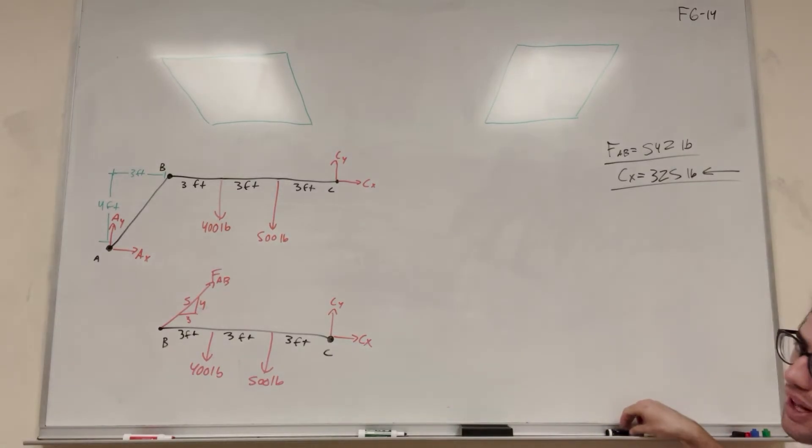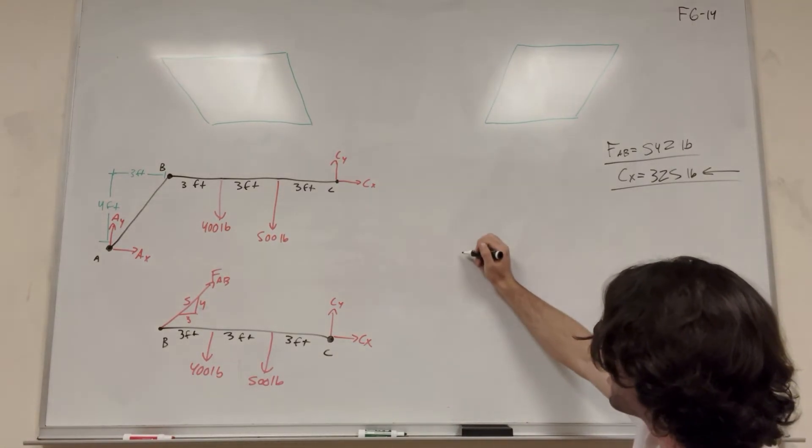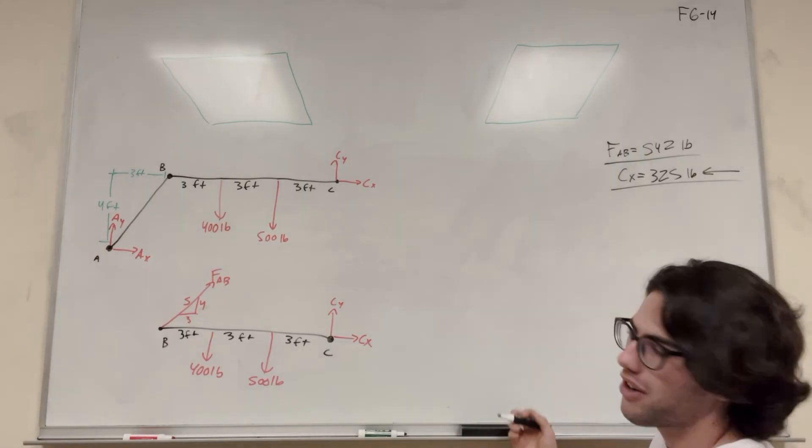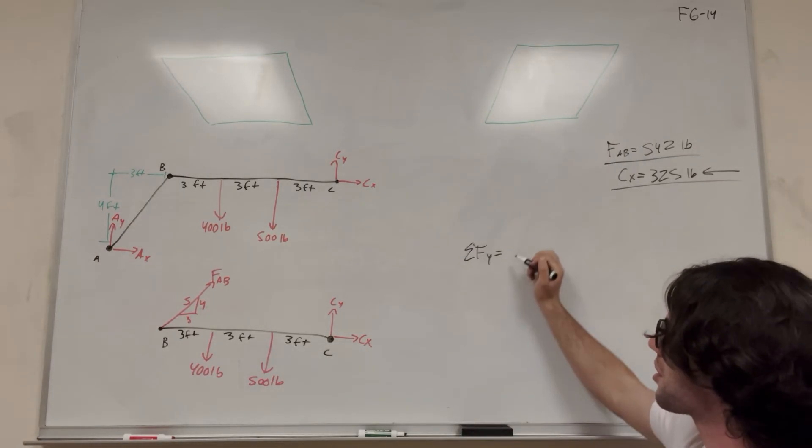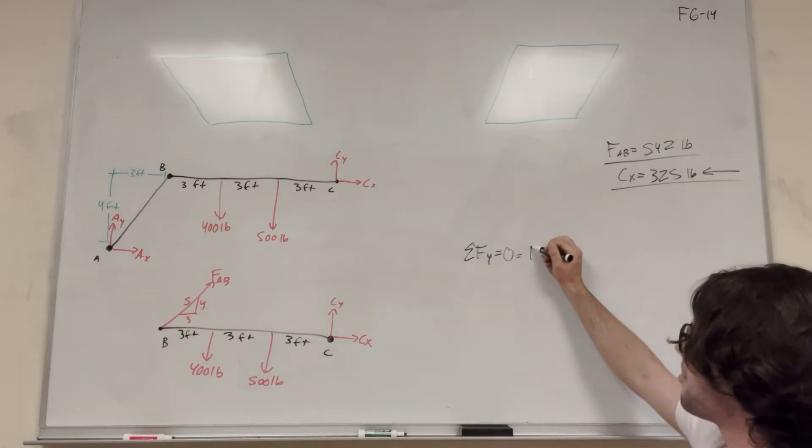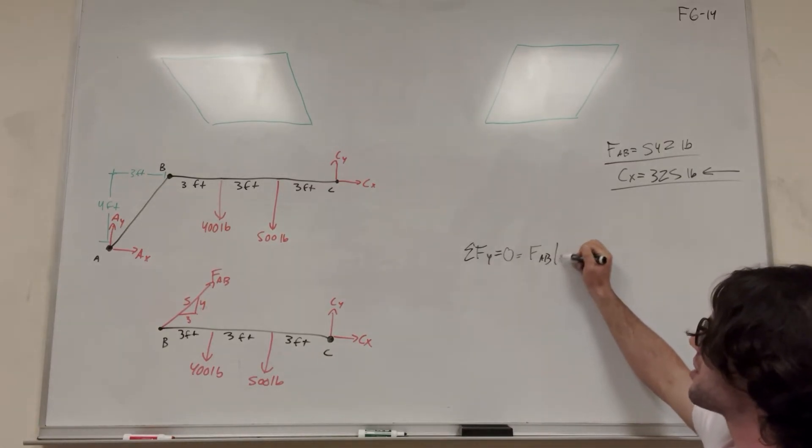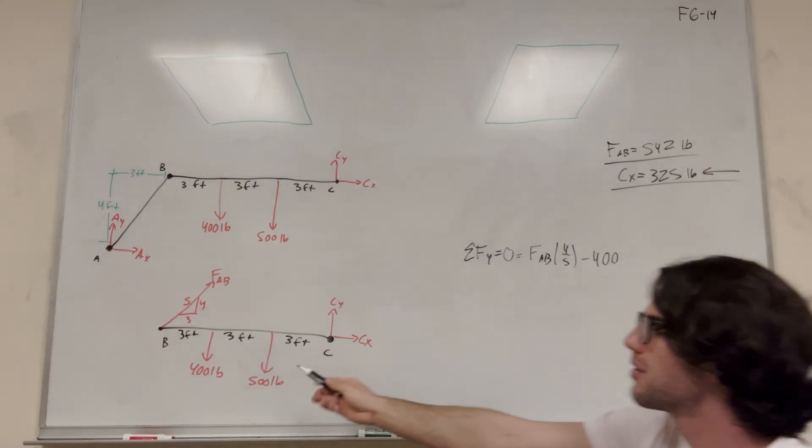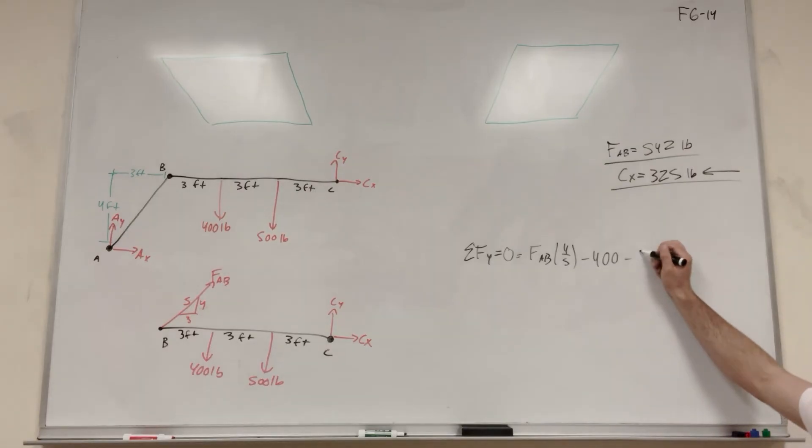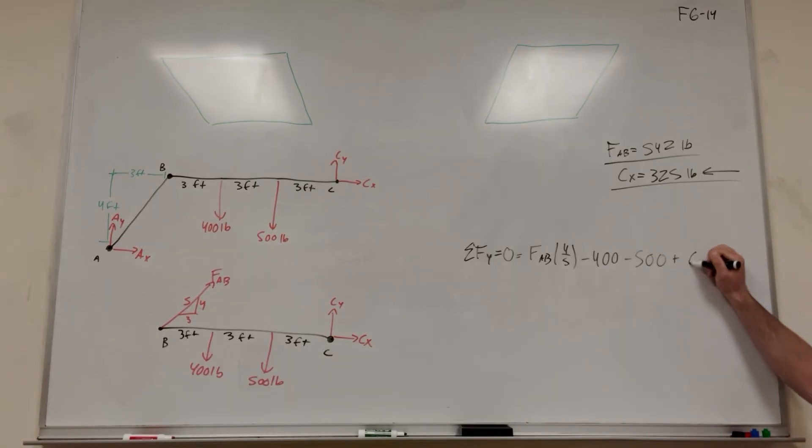And finally, C_Y, that's the only thing we have left to find. We're going to find sum of the forces in the y direction. It's equal to zero. It's equal to force AB. Its ratio is 4 over 5 in the y direction, minus 400 from the pounds pushing downward, minus 500, and then plus C_Y.